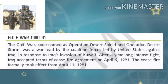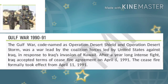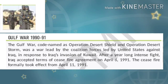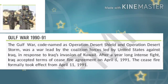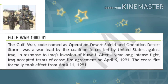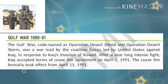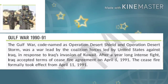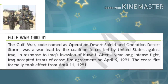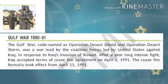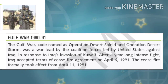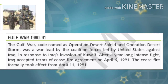Gulf War 1990-91. The Gulf War, codenamed Operation Desert Shield and Operation Desert Storm, was a war led by coalition forces led by the United States against Iraq in response to Iraq's invasion of Kuwait. After a year-long intense fight, Iraq accepted the Terms of Ceasefire Agreement on April 6, 1991.